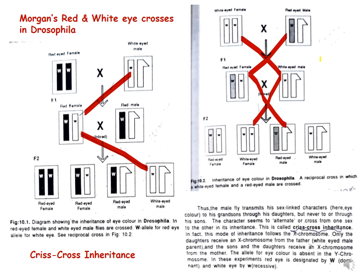This is called criss-cross inheritance, as observed by Morgan. From these crosses we understand that the male fly transmits his sex-linked character — here, eye color — to his grandsons through his daughters, but never to his sons. The character alternates from one sex to the other across generations, and this is called criss-cross inheritance.